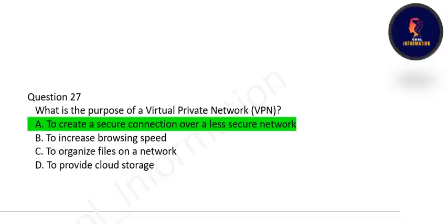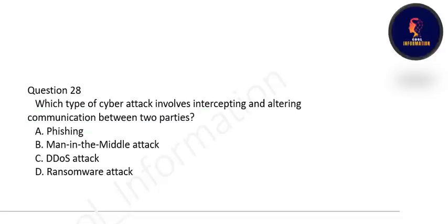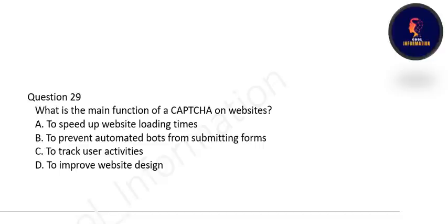Next question: which type of cyber attack involves intercepting and altering communication between two parties? Options are phishing, man-in-the-middle attack, DDoS attack, or ransomware. The correct option is B — a man-in-the-middle attack.